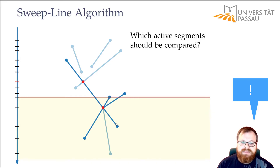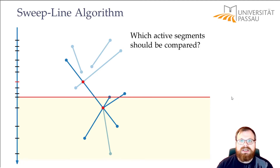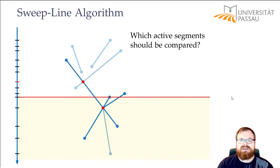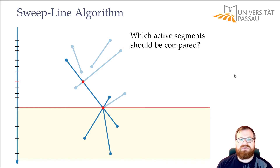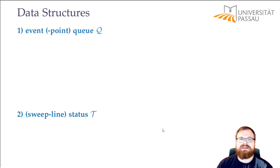We need to order segments from left to right by their intersection with the sweep line. So we need another data structure where we can save a collection of segments ordered, easily add new segments, easily remove segments, and easily switch the order between two neighbors. These are the two data structures we need: the first for the event points and the second for the sweep line status.